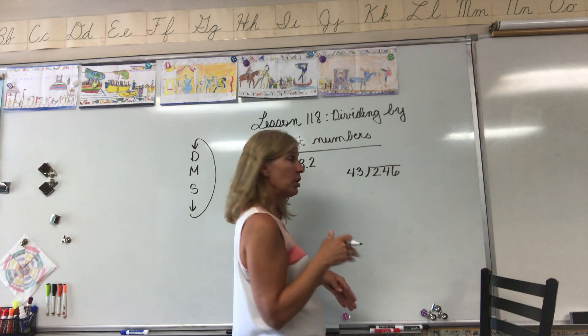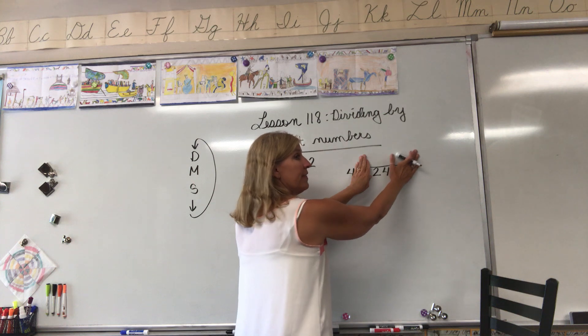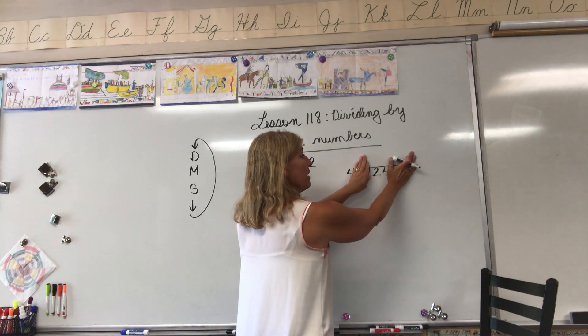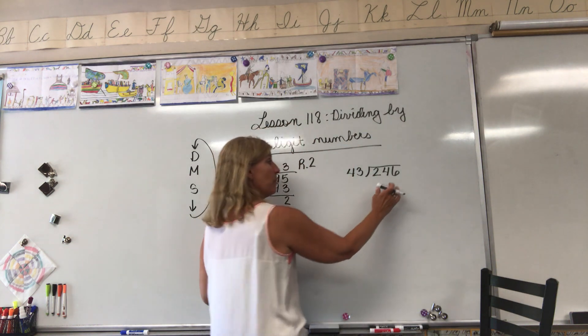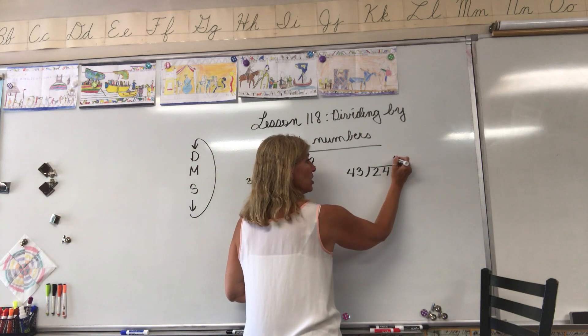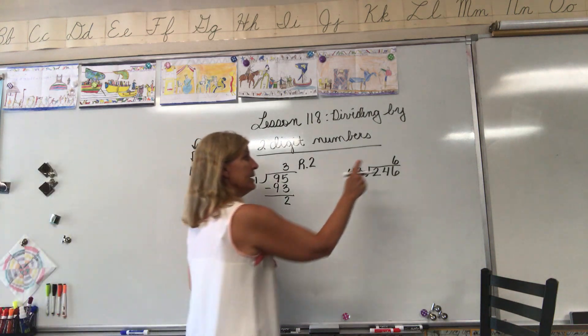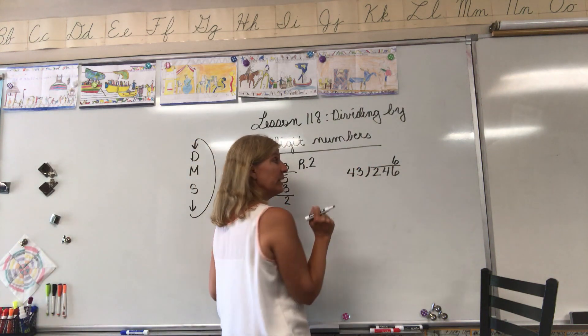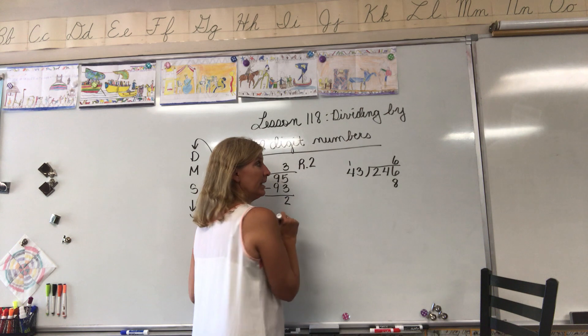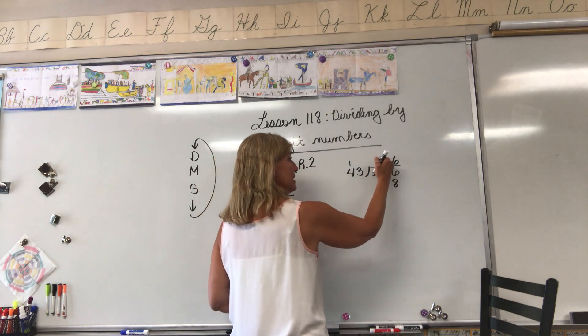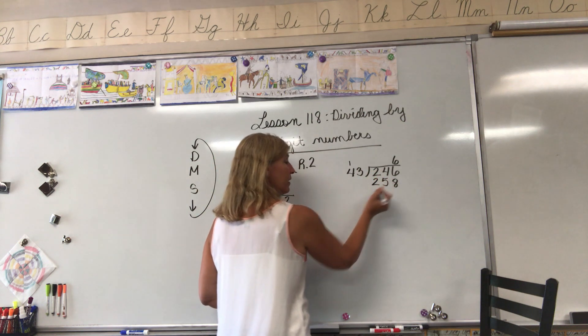I'm going to recommend as a starting point that you cover your last digit and think 24 divided by 4. That gives us a good place to start. What is 24 divided by 4? It is 6. So we're going to start with 6. Next we multiply. 6 times 3 equals 18. Notice where I put the 1 here, we're going to need to remember to add that back in. 6 times 4 equals 24 plus 1 is 25.